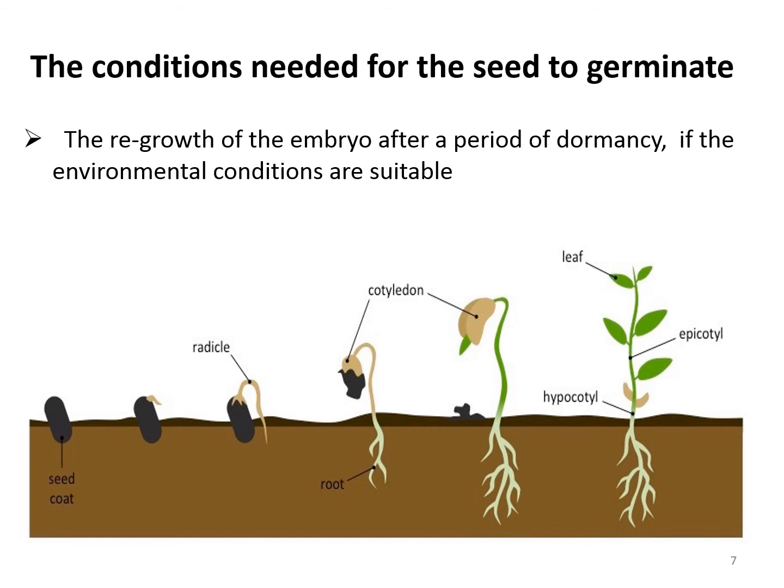What is germination? It is the regrowth of the embryo after a period of dormancy when environmental conditions are suitable. The picture below shows the germination process. A seed with a tiny embryo inside remains in the ground until conditions are right for germination. The seed coat or testa first fractures; the embryo can then absorb water, and the embryonic root — the radicle — grows into the ground to extract key nutrients and minerals. The cotyledon emerges and produces the first leaves. The growing plant can be divided into the epicotyl, hypocotyl, and developing roots.